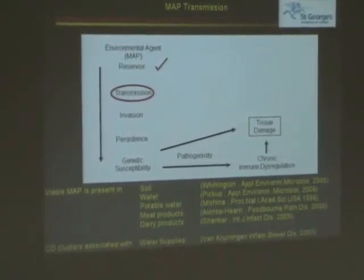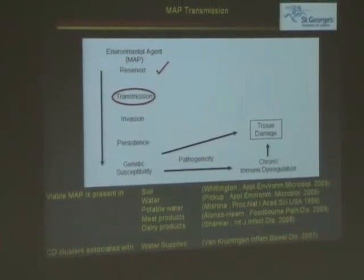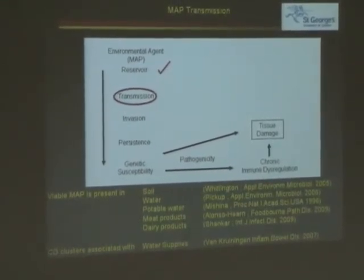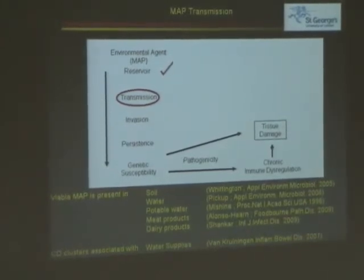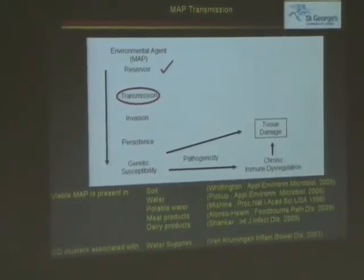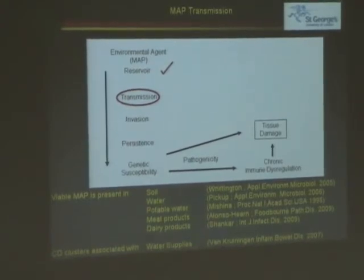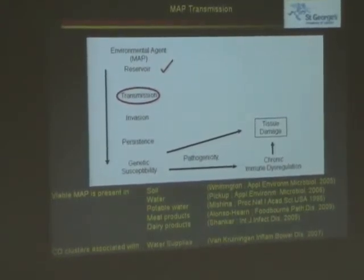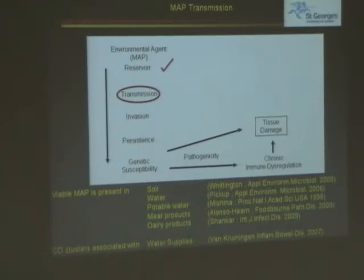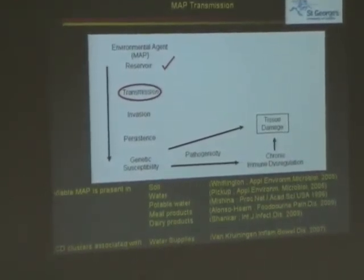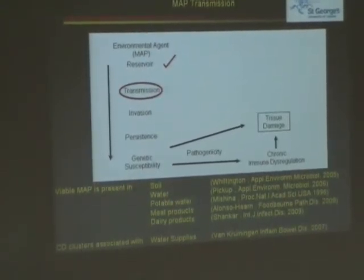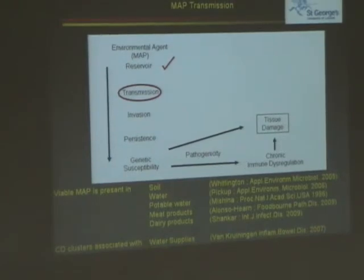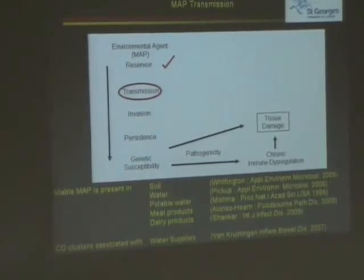We know there are viable vectors of transmission: viable MAP coming down the rivers, viable MAP in our environment, viable MAP in meat products and in our dairy products. We can also correlate some of those viable MAP transmission vectors to Crohn's disease clusters in some cases. But actual transmission really needs to be shown — specifically transfer between animals and humans. So have we got any examples of that?